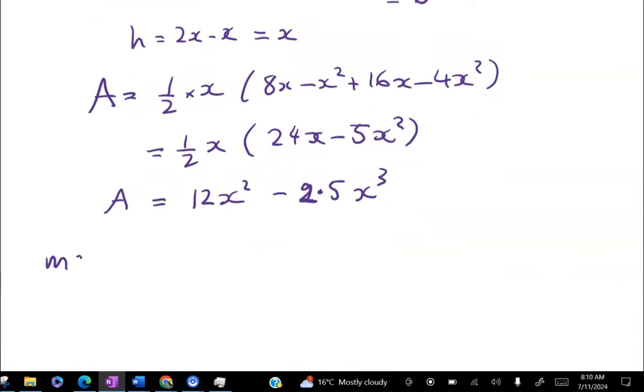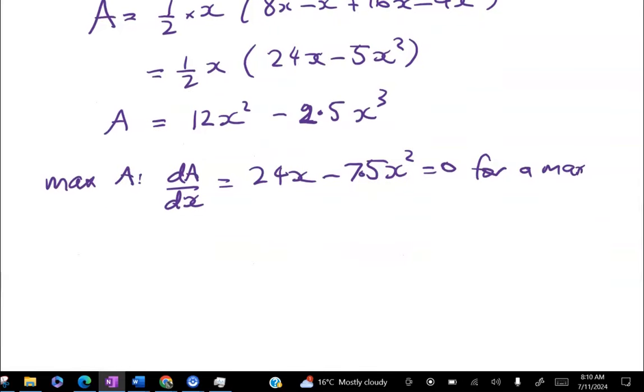To maximize, we need to differentiate and set that equal to 0. So that gives me dA/dx = 24x - 7.5x². So it has to be equal to 0 for a maximum.